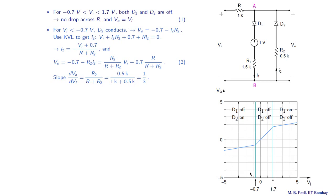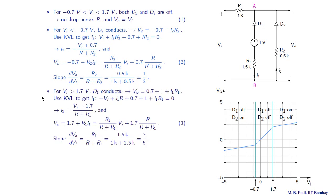For Vi less than minus 0.7 volts, D2 is on and D1 is off, giving a straight line with slope one-third. The Vo versus Vi relationship is continuous across the boundary: at Vi equals minus 0.7 volts, equation one predicts Vo equals minus 0.7 volts, and equation two also gives minus 0.7 volts, confirming continuity.